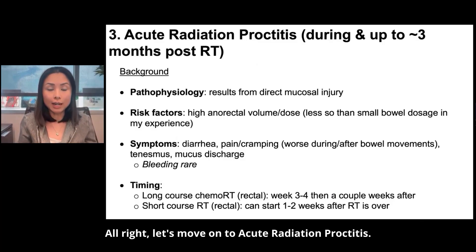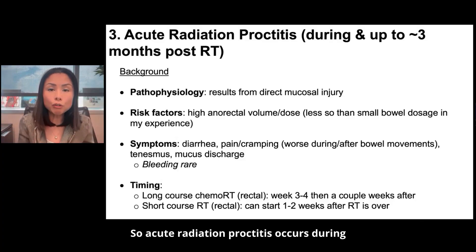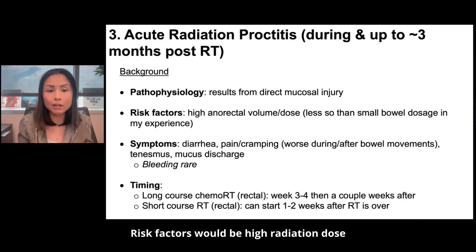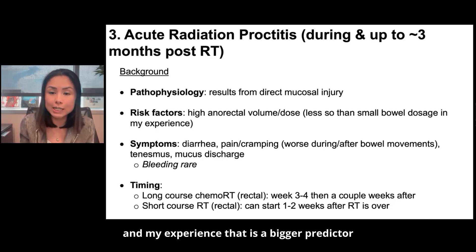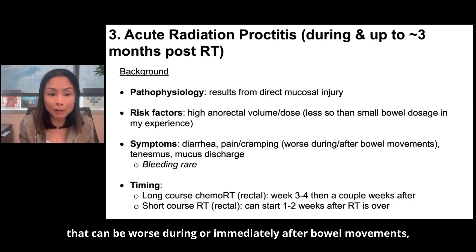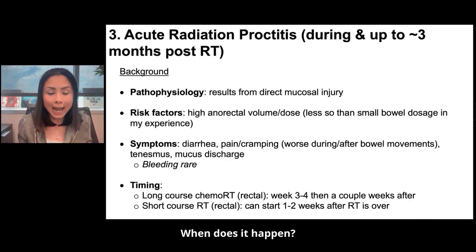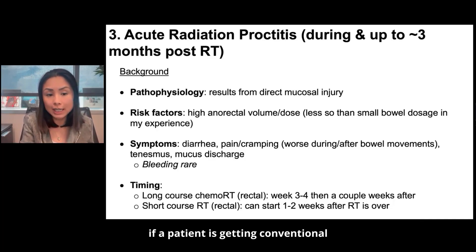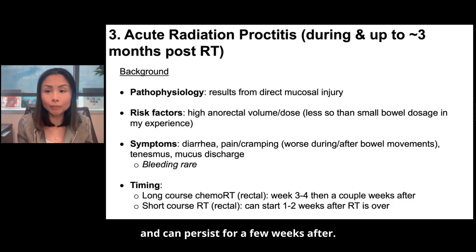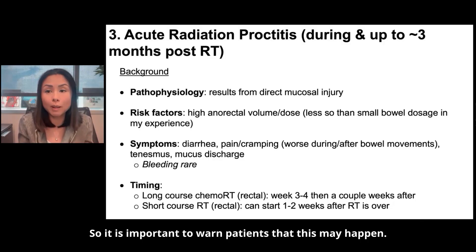Let's move on to acute radiation proctitis. I separate acute versus chronic because the pathophysiology, symptoms, and management are different. Acute radiation proctitis occurs during and up to three months after radiation, and is a result of direct mucosal injury. Risk factors include high radiation dose to the anorectal structures. Main symptoms are diarrhea, pain, and cramping that can be worse during or immediately after bowel movements, tenesmus, and mucosal discharge. Bleeding is quite rare in acute proctitis. For long-course chemoradiation, symptoms typically start in the second half of treatment; for short-course radiation, symptoms don't start until one to two weeks after radiation is over, so it is important to warn patients.